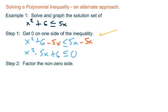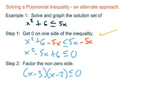Step two: factor the non-zero side. Here you use your techniques for factoring trinomials. You're thinking about finding two numbers whose product is 6 but whose sum is negative 5, and it's not too hard to see that factors very neatly as x minus 3 times x minus 2. So the inequality can be rewritten as the quantity x minus 3 times the quantity x minus 2, less than or equal to zero. You can use the FOIL rule to check that. Step two is done.